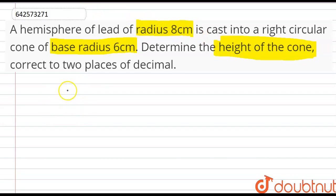So we are given that the radius of hemisphere is 8 cm and the radius of cone is 6 cm.